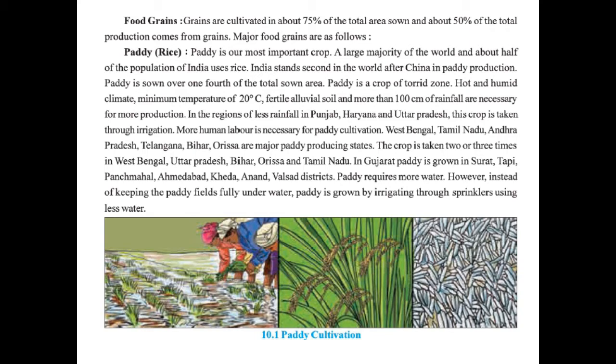Hot and humid climate, minimum temperature of 20 degree Celsius, fertile alluvial soil, and more than 100 cm of rainfall are necessary for more production. In the region of less rainfall in Punjab, Haryana and Uttar Pradesh, this crop is taken through irrigation. More human labour is necessary for paddy cultivation. West Bengal, Tamil Nadu, Andhra Pradesh, Telangana, Bihar, and Orissa are major paddy producing states.